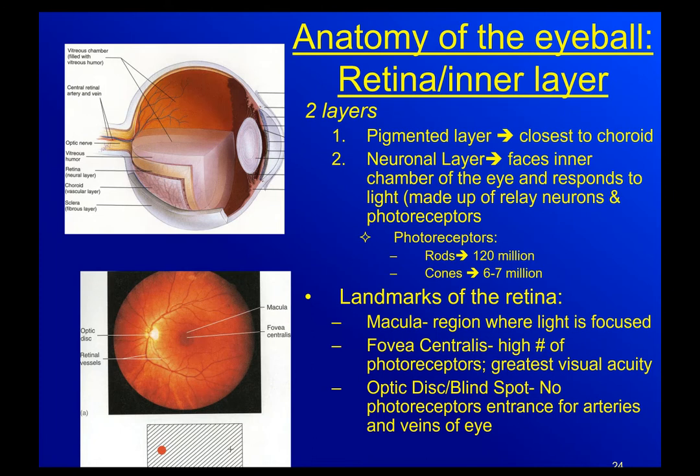This is Special Census part four. We've talked about the outer covering of the eye and the middle layer of the eyeball. Now we're going to talk about the inner layer.